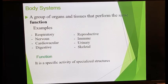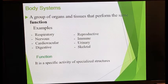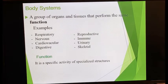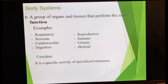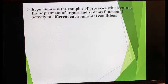A system is a group of organs and tissues that perform the same function. Examples include the respiratory system, nervous system, immune system, and skeletal system. In physiology, when we say 'function,' we are talking about the specific activity of specialized structures — whatever activity those specialized structures perform is their function.